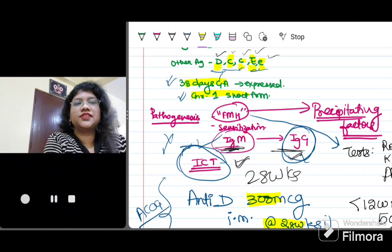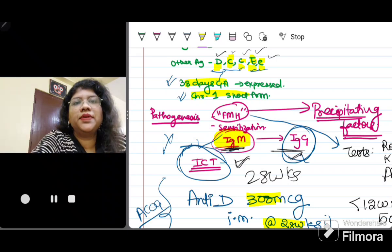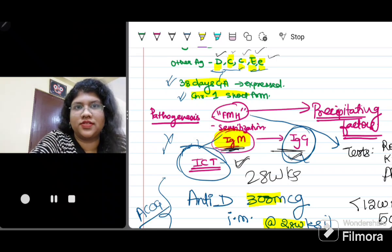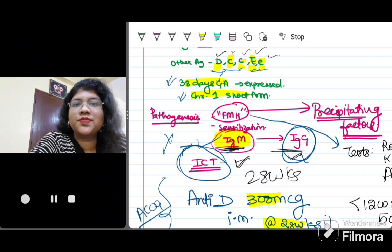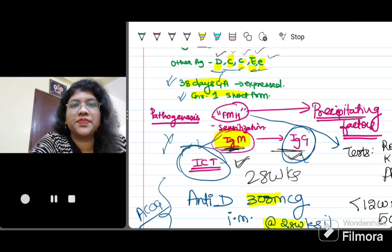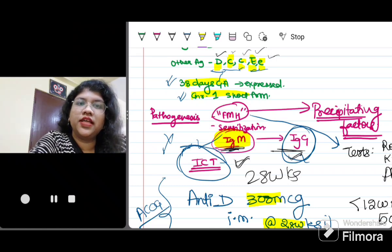Remember the first time they are exposed, they produce IgM antibody. Remember that IgM does not cross the placenta. So the first pregnancy is usually uneventful, but subsequently there is production of IgG antibody and that is why the subsequent pregnancies become high risk conditions.